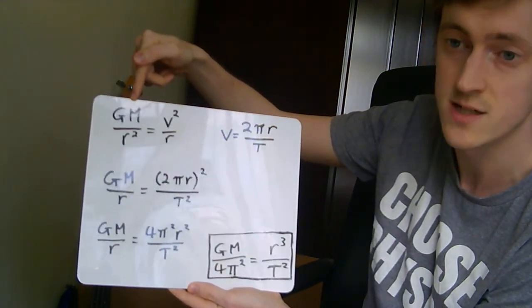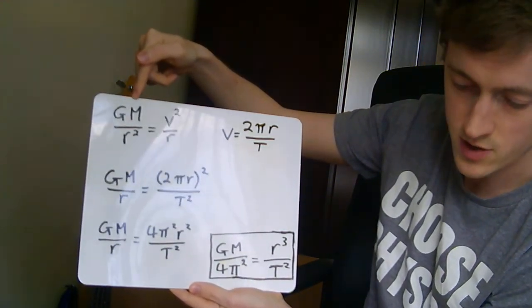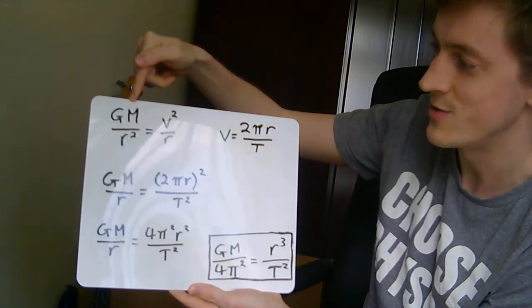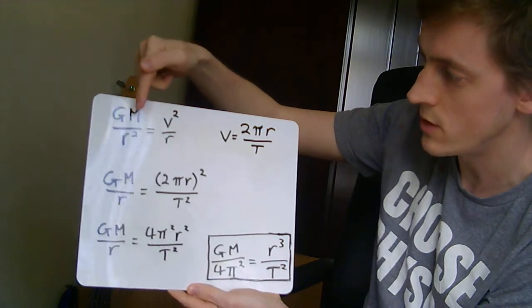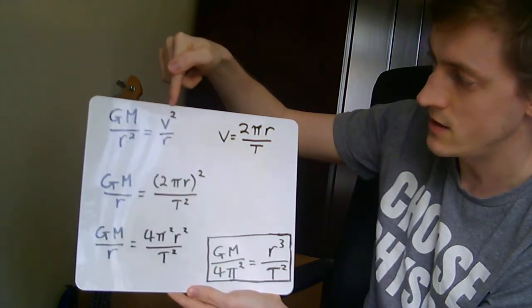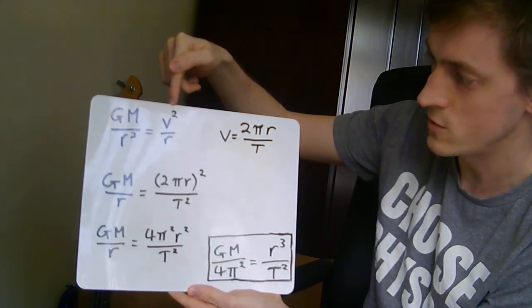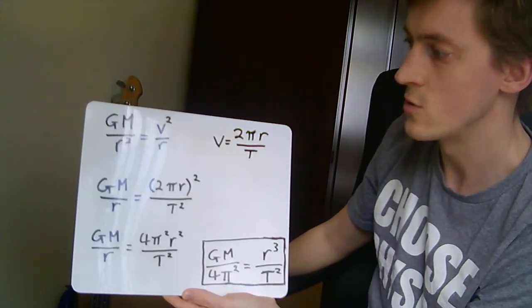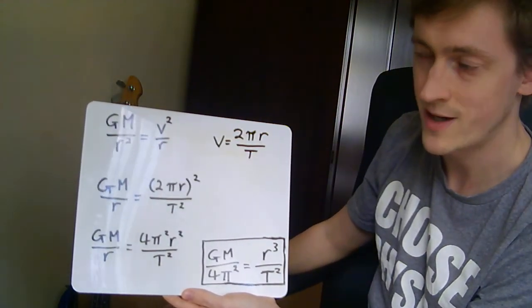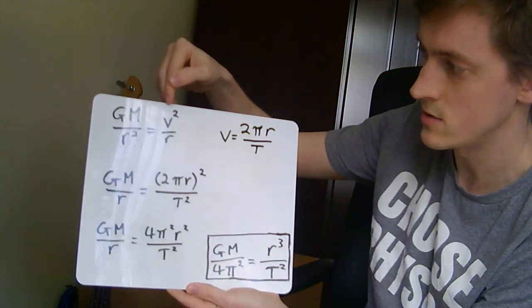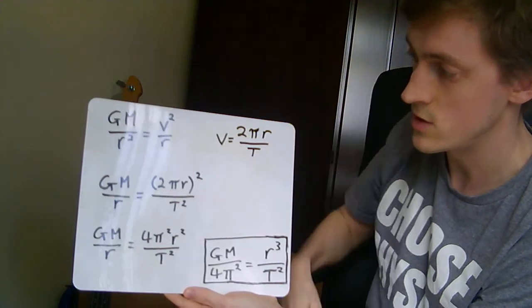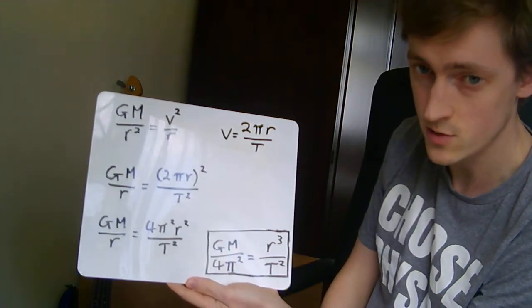You might recognize it as the expression for little g, the expression for gravitational acceleration: GM over r squared. This bit here is the expression for centripetal acceleration. Newton said gravity is the force that is keeping these things going round. So the gravitational acceleration has got to be equal to the centripetal acceleration of these objects as they go round in a circle.